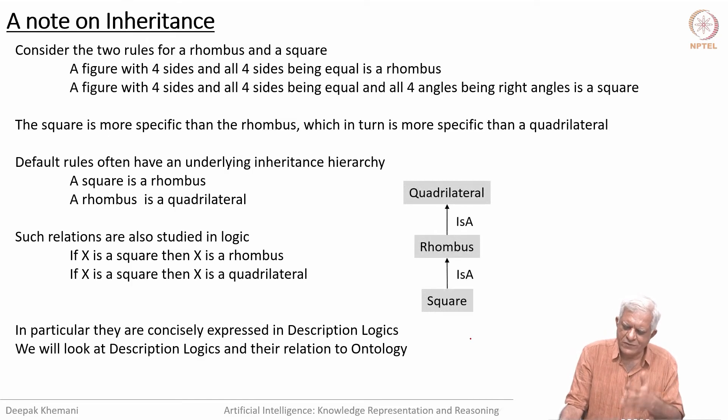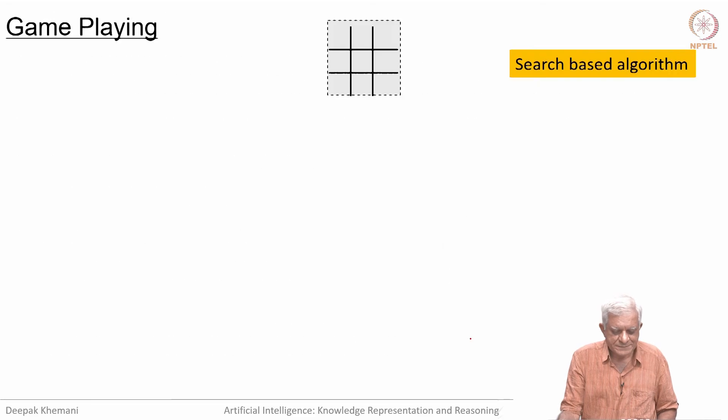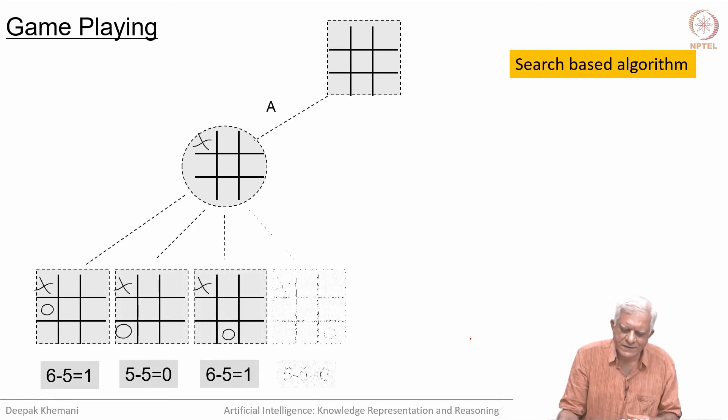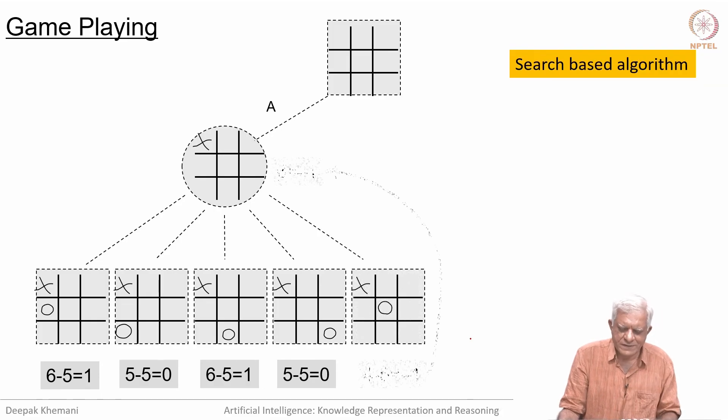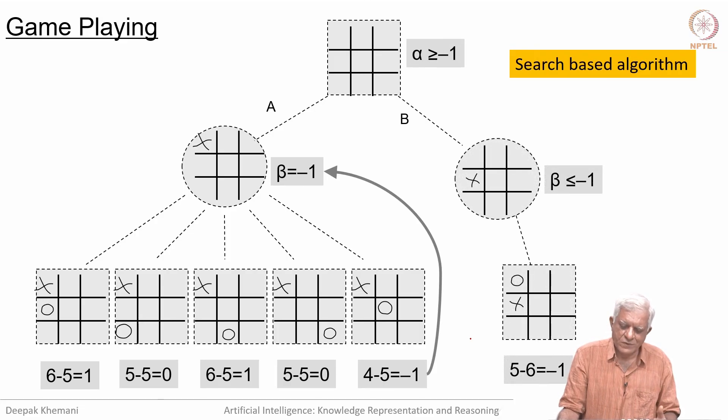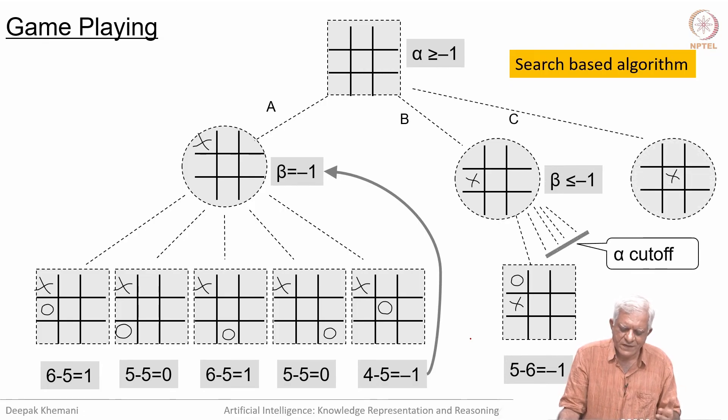In a description logic or in an inheritance network, you might represent it like this, saying that a square is a rhombus, or a rhombus is a quadrilateral. I want to end with a different problem, which is that of game playing, which we study in a different course on search methods. In search methods, when you play games like tic-tac-toe or chess or Go, we search over the search tree. This slide I have taken from that course shows how you search—depth-first search, moving from left to right, and you do certain kinds of cut-offs called alpha-beta cut-offs. There is an algorithm called the alpha-beta algorithm. That was a search algorithm.